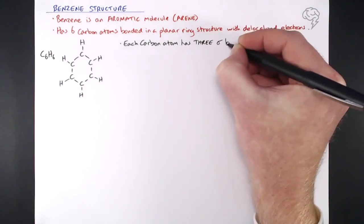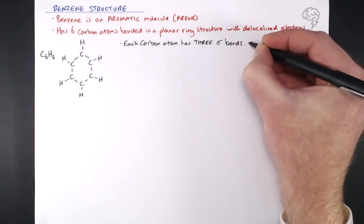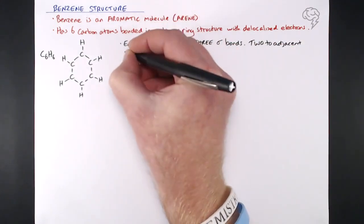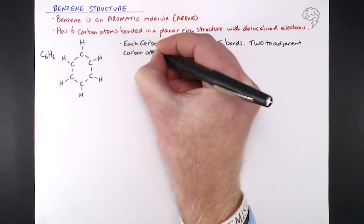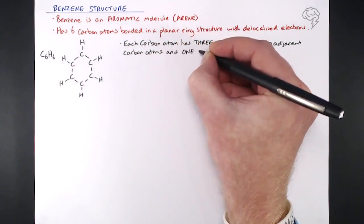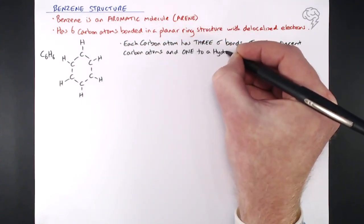Two of them are to the adjacent carbon atom, so the carbons are at either side of it. The other one, the third one, is to the hydrogen atom that it's also bonded to. So each of those three bonds on each carbon, they're all sigma bonds, two to carbon and one to a hydrogen atom.